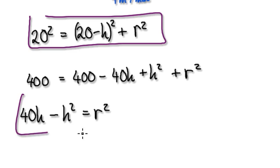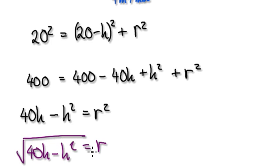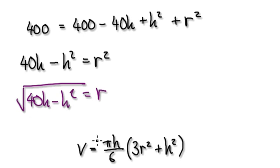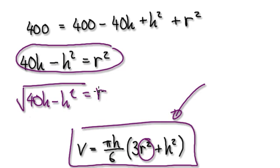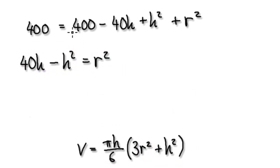We could write it like this, but if you look at the formula from above - the volume formula - you've got r squared. So why square root it and then later square it? Why not just put this whole thing into r squared?